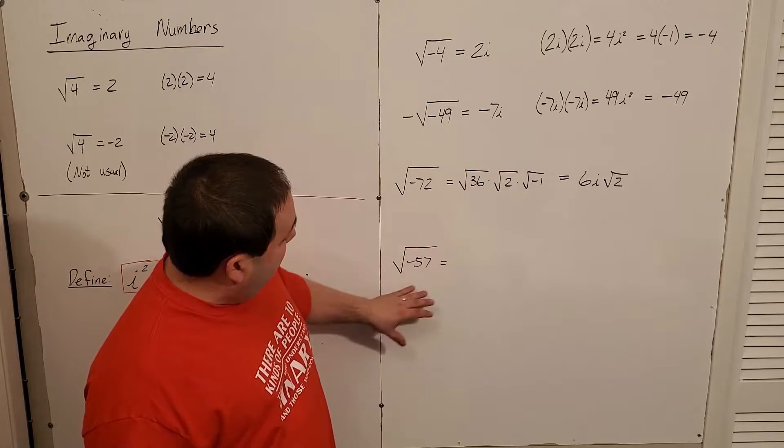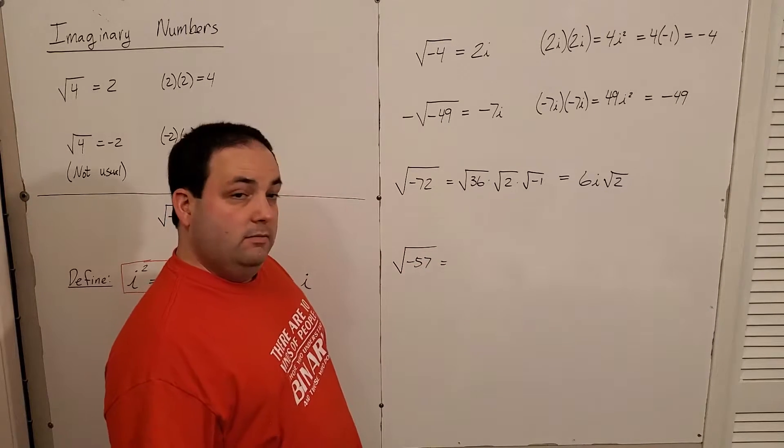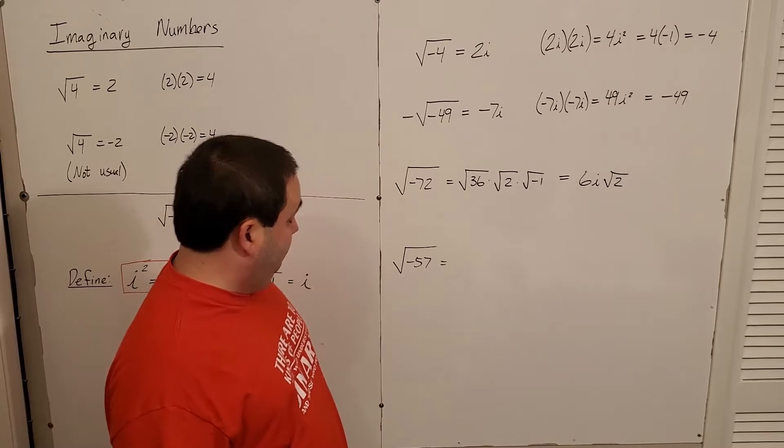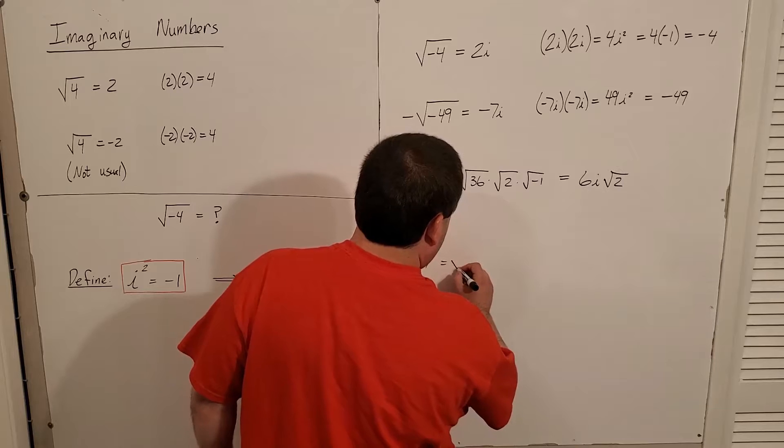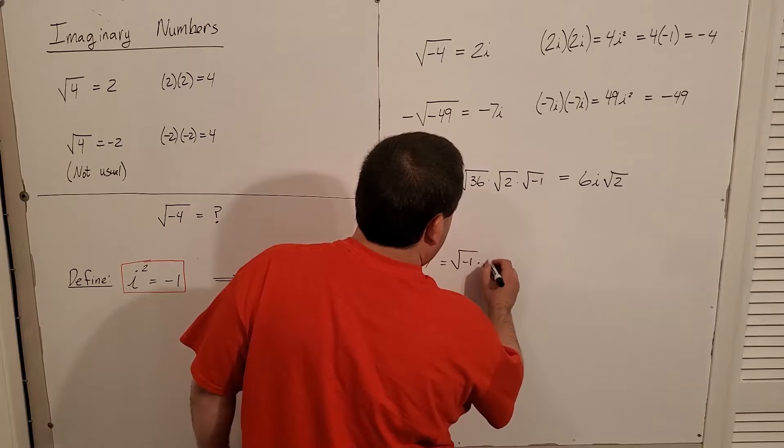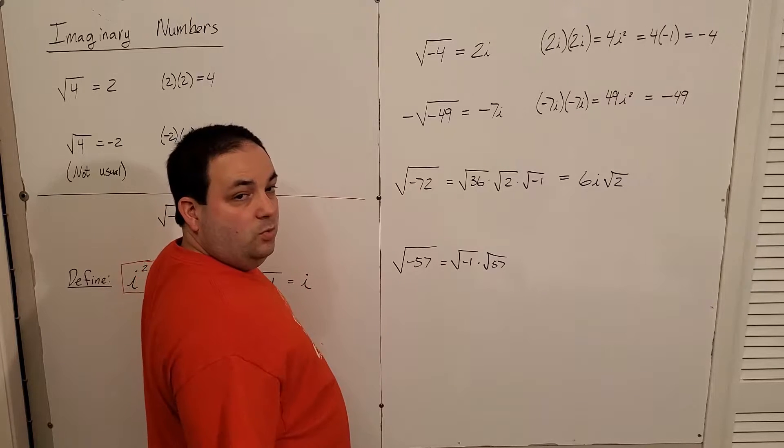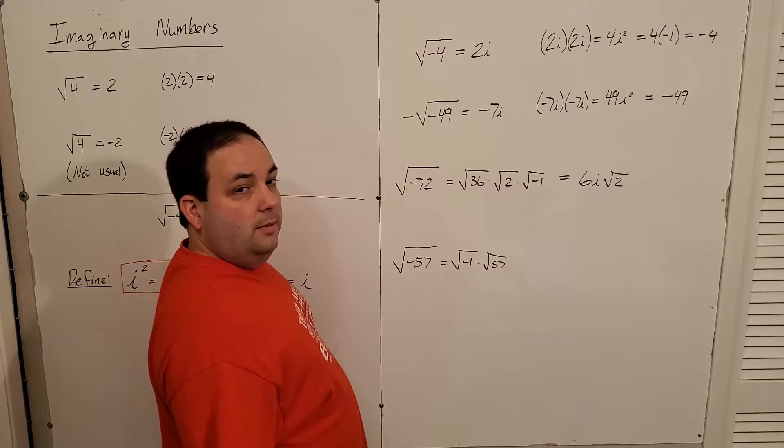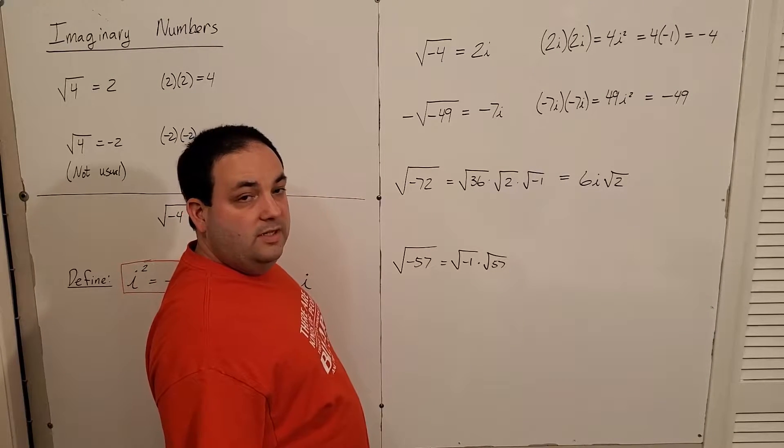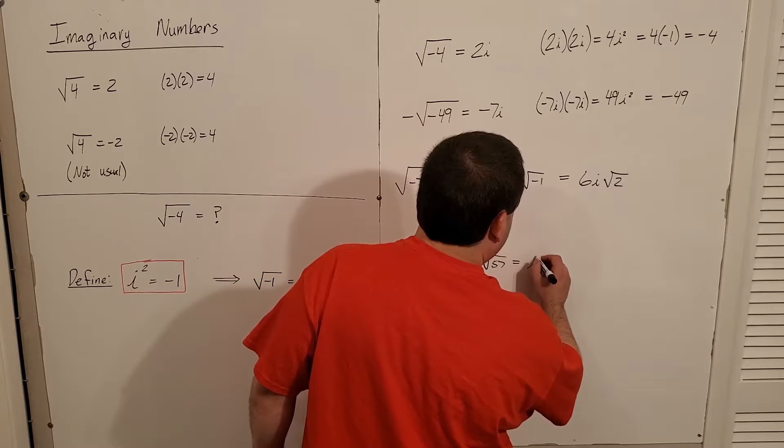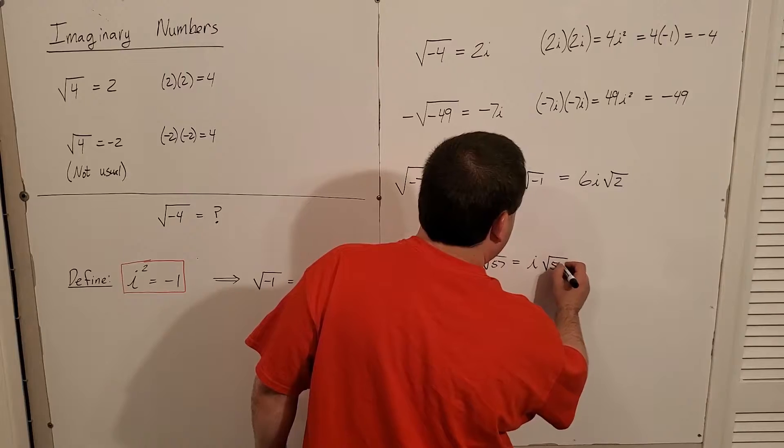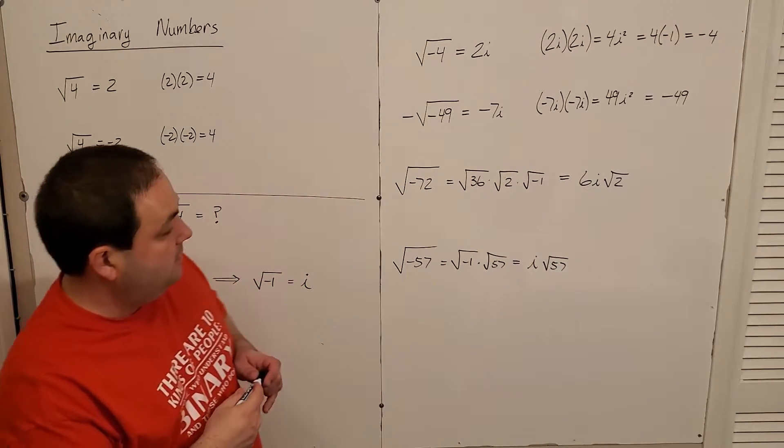If I have something that normally can't be simplified, like square root of 57, then I just split it square root of negative 1 times square root of 57. It's just 3 times 19, but neither of those can be simplified in a radical. So I just write it as i square root of 57, and that's considered simplified in that case.